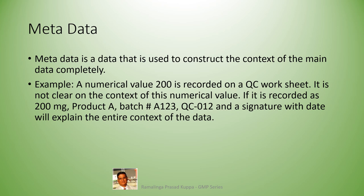See this example: a numerical value of 200 is recorded on a QC worksheet, but it is not clear on the context of this numerical value. If it is recorded as 200 mg, product A, batch number A123, QC012, and a signature with date, we explain the entire context of the data. The metadata provides tracking information that 200 mg of the product of batch number A123 is weighed on the analytical balance by the person signed and dated for a typical analysis.